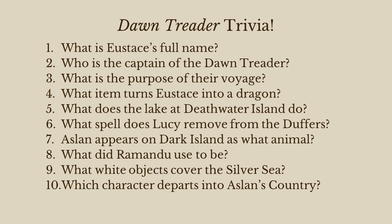Number eight: what did Ramandu used to be? He's a retired star — he used to be a star. He regularly receives a firestone from birds that come to the island and replenish him, and eventually he'll be rejuvenated as a star again. Number nine: what white objects cover the Silver Sea at the end of the world? Lilies. Number ten: which character departs into Aslan's country? Reepicheep, who is probably my favorite character in this book. We're going to have more to say about Reepicheep today as well.